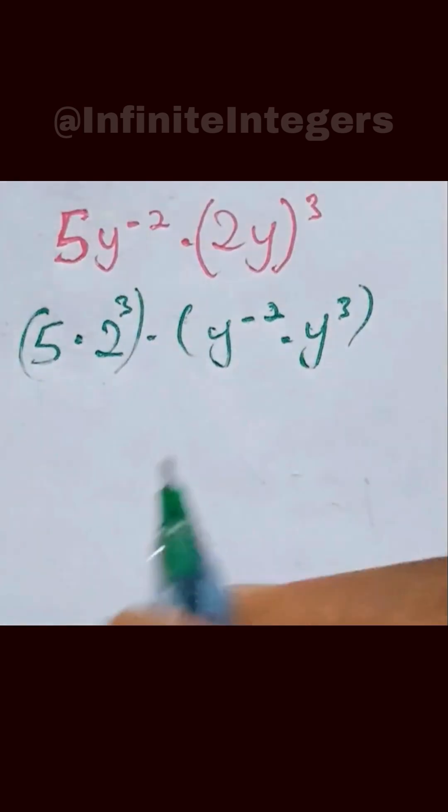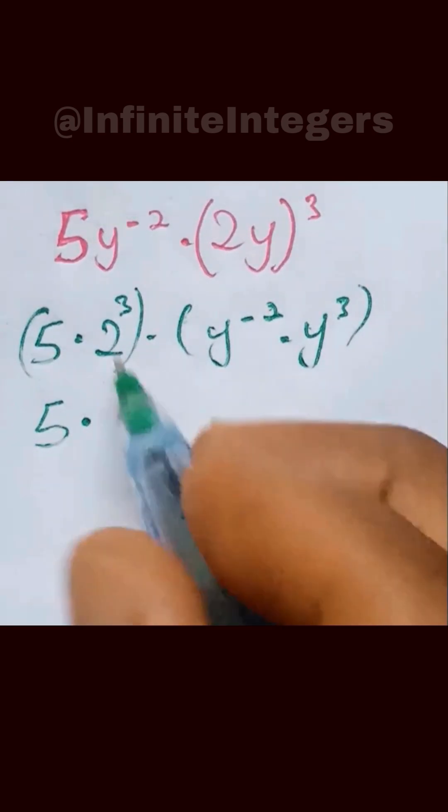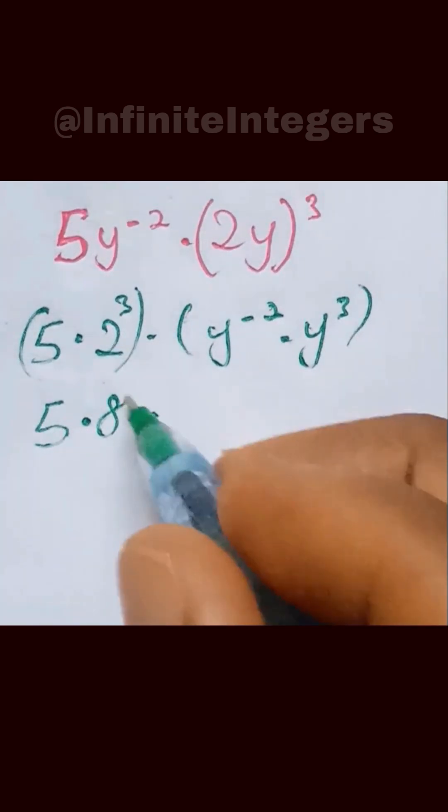Let's take the bracket. So this gives us 5 multiplied by 8, then multiplied by...